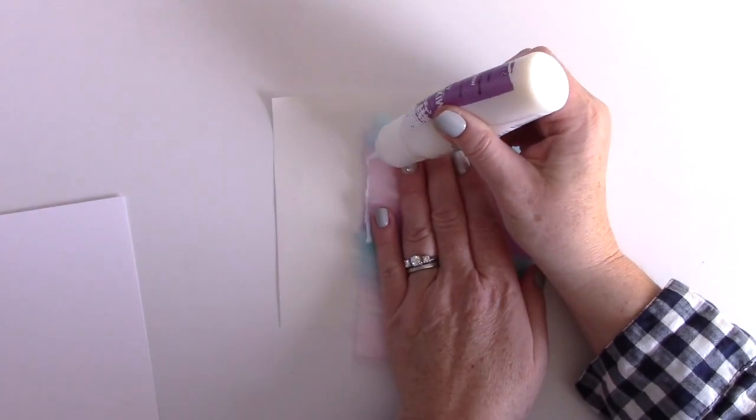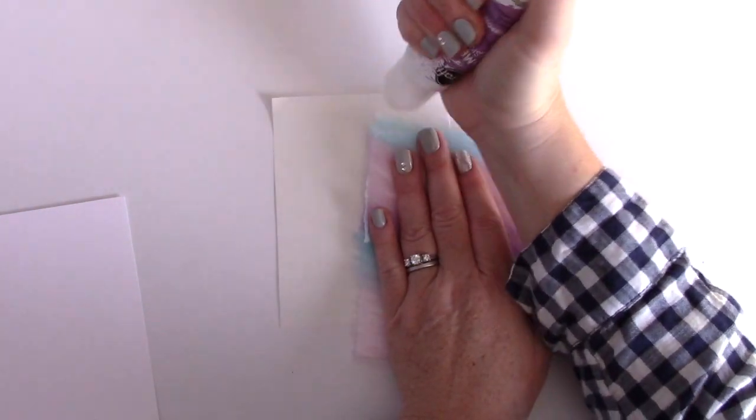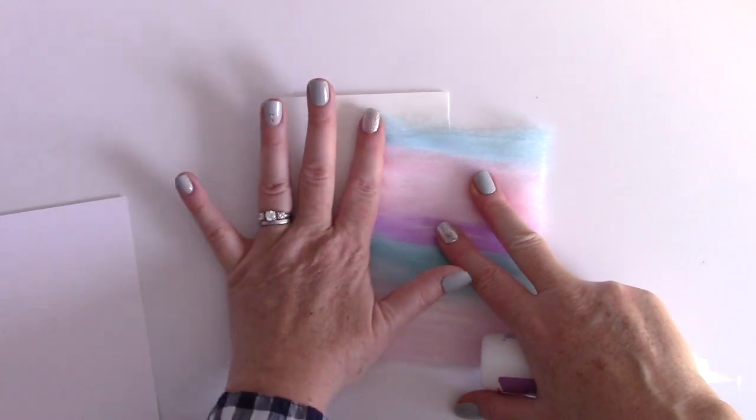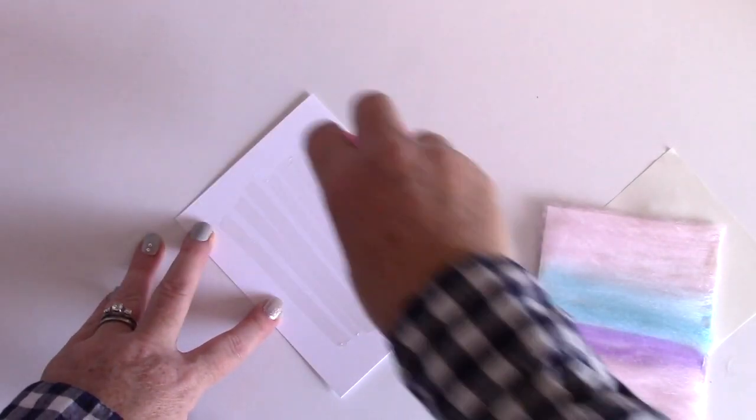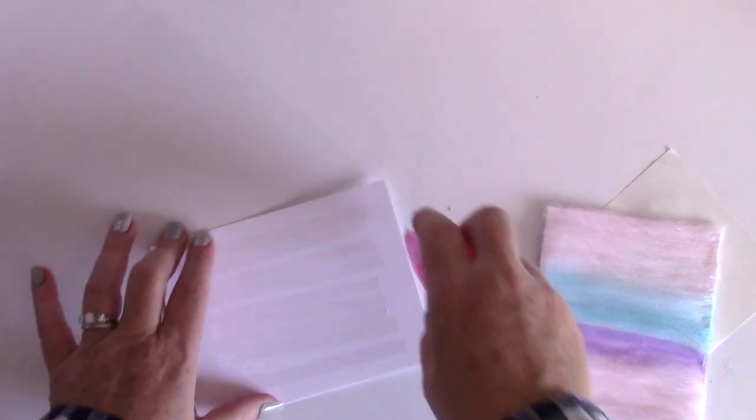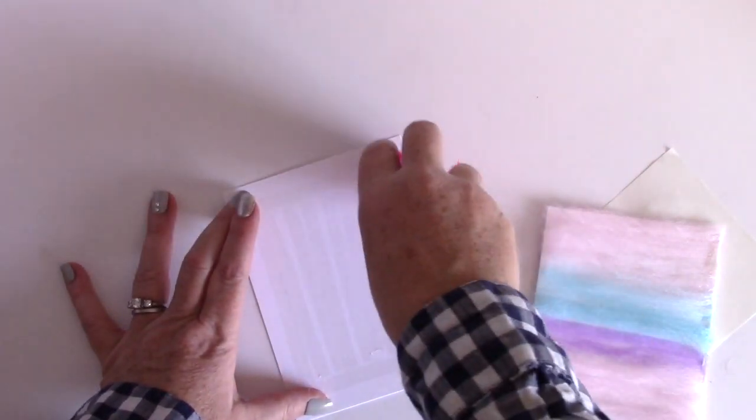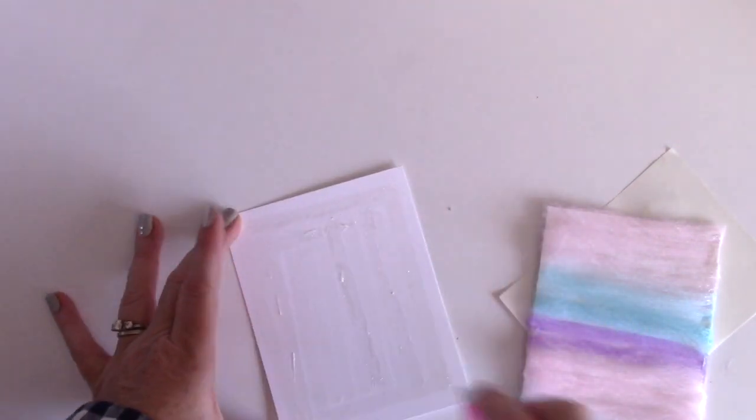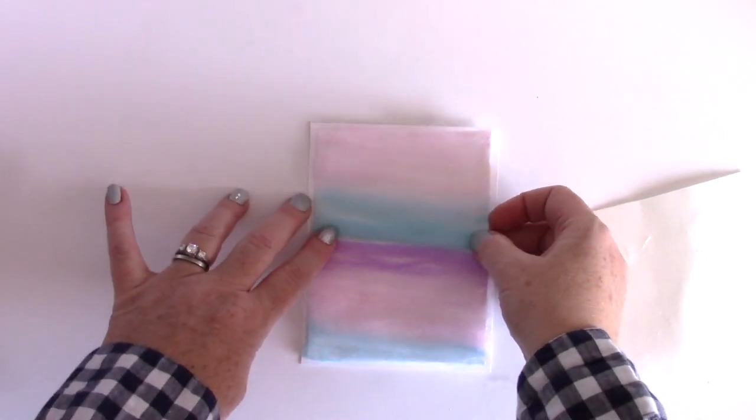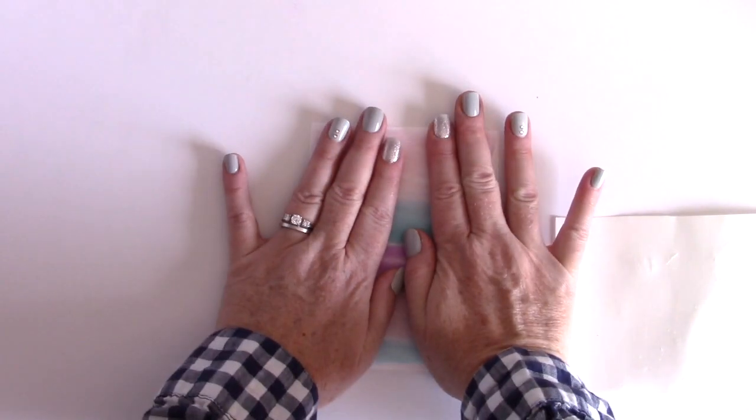I'm gonna use some Thermoweb mixed-media adhesive. This is a liquid adhesive and I'm just gonna put a line on the edge there and then press it down. Next I'm gonna grab my four and a quarter by five and a half inch card panel and I'm going to lay adhesive all over that center of it, leaving a tiny little border because that is going to be the border on the outside of my cotton candy panel.